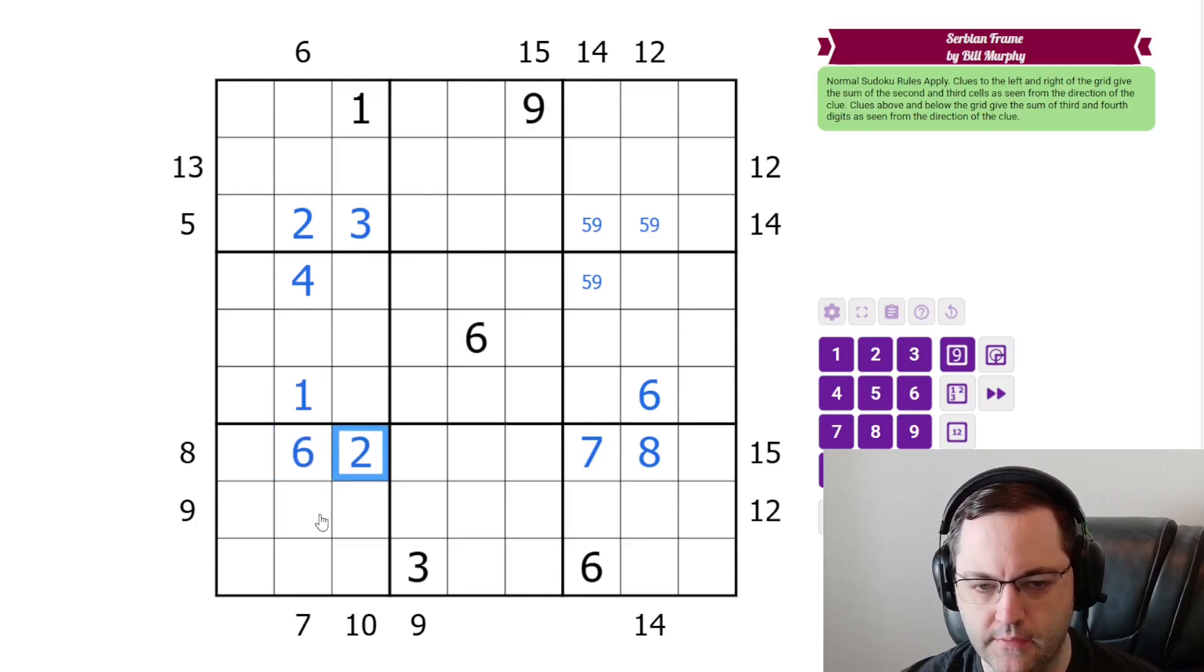That makes the eight, six, two. The nine can't be three, six or two, seven or one, eight because of these ones, so it must be four, five in this order.